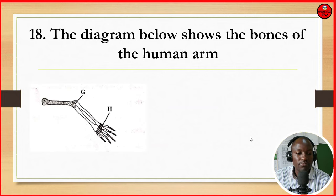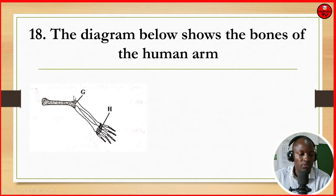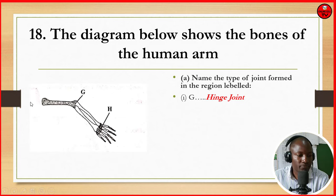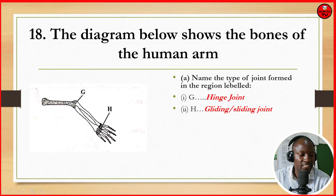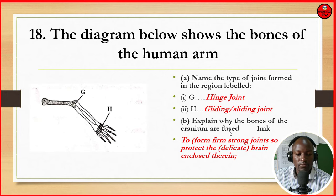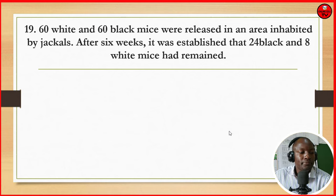The diagram shows the bones of the human arm, with a place labeled G and labeled H. Name the type of joint formed in the region labeled G — that is a hinge joint. At H it is a gliding or sliding joint. Explain why the bones of the cranium are fused: to form strong, firm joints so as to protect the delicate brain which is enclosed therein.